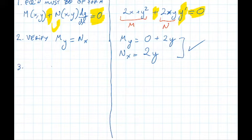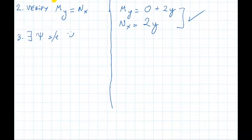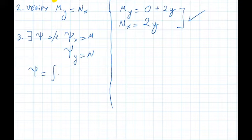Number 3. Once m sub y is equal to n sub x, then we know by the theorem that there exists a function psi such that psi sub x is equal to m, psi sub y is equal to n. And therefore, we can integrate both sides to find psi. Psi is equal to integral of m dx, or psi is equal to integral of n dy. You only need to do one, not both. So pick one that's easy. In this case, I'm going to pick n.